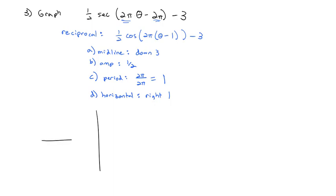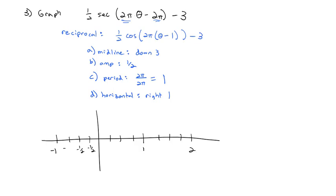Setting up the graph with period 1: we mark x = 1, 2, and -1. Splitting into quarters gives tick marks at -3/4, -1/2, -1/4, 1/4, 1/2, 3/4, 5/4, 3/2, 7/4. Since we're drawing a reciprocal, we'll add a few extra lines. On the y-axis we mark 1, 2, 3 and -1, -2, -3.